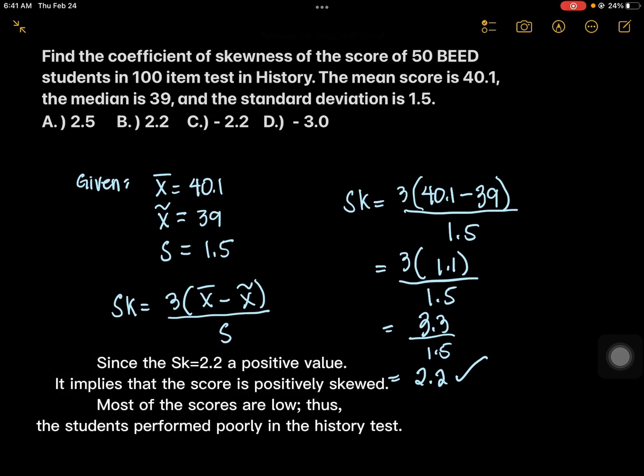Since the coefficient of skewness is 2.2, the value is positive. It implies that the score distribution is positively skewed. Most of the scores are low. Thus, the students performed poorly in the said history test.